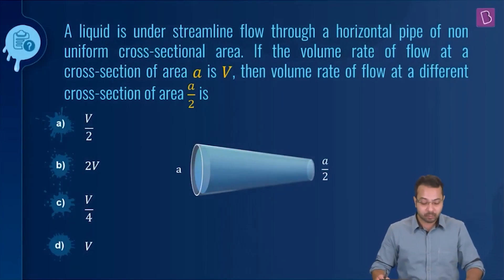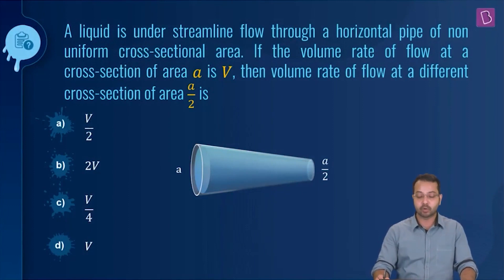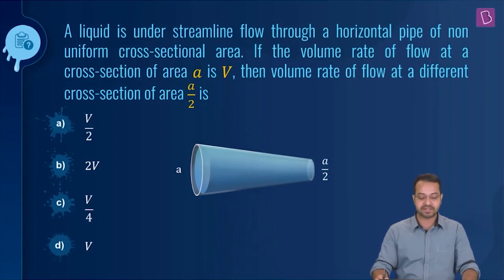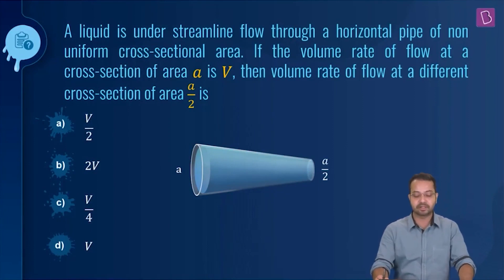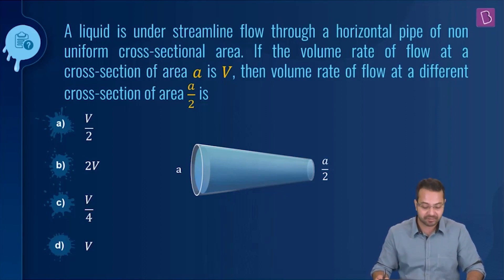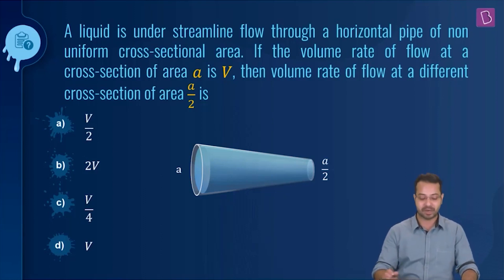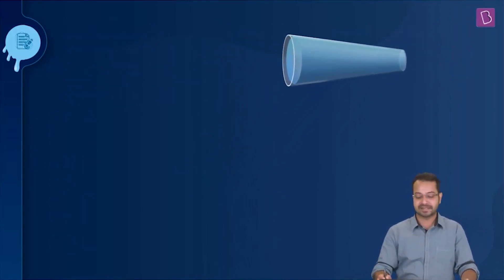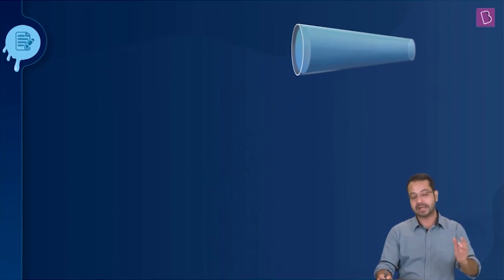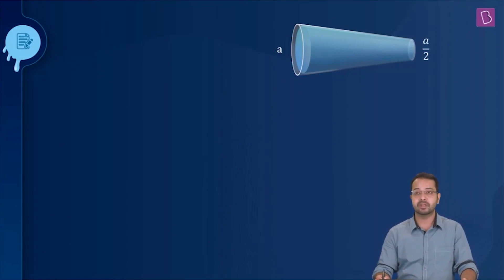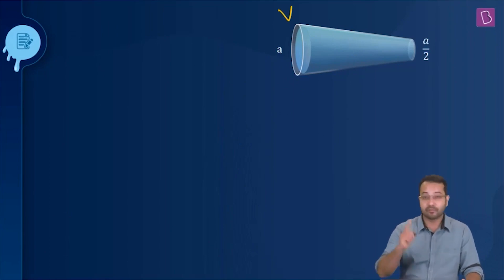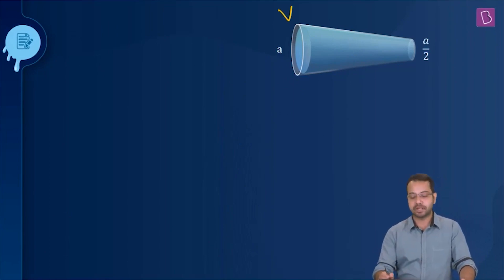The question is: a liquid is under streamline flow through a horizontal pipe of non-uniform cross-sectional area. If the volume rate of flow at a cross-section of area A is V, then the volume rate of flow at a different cross-section of area A/2 is? One end has area A, the other end has area A/2. At this point the volumetric flow rate is V — what is it at the other end?